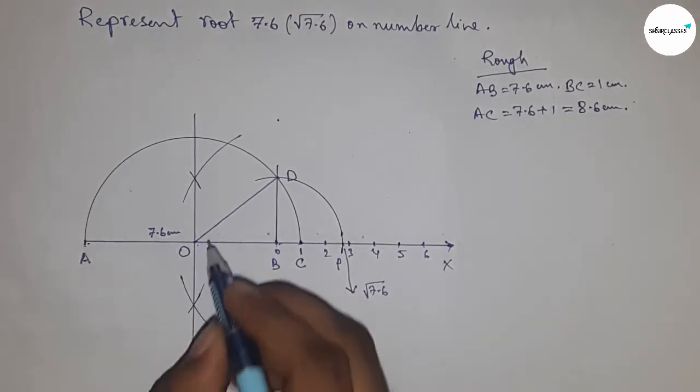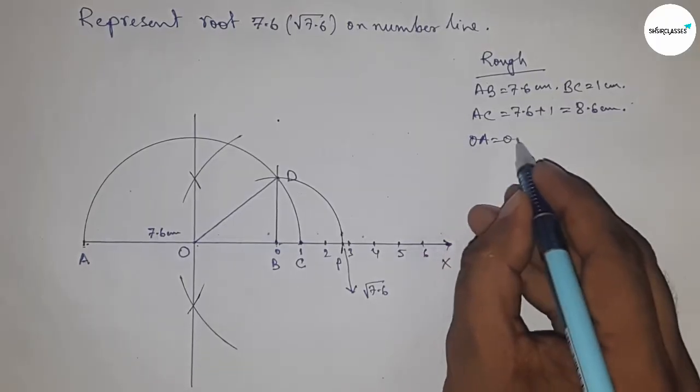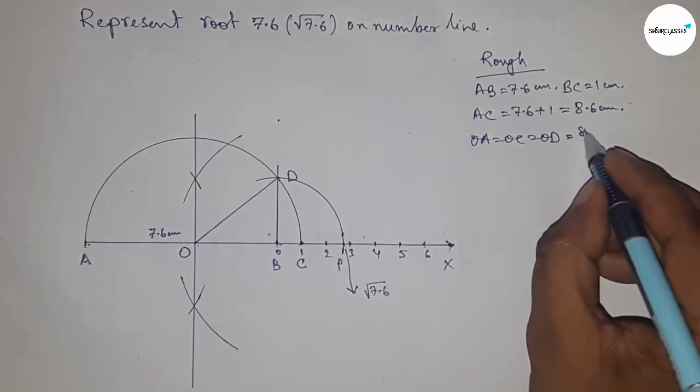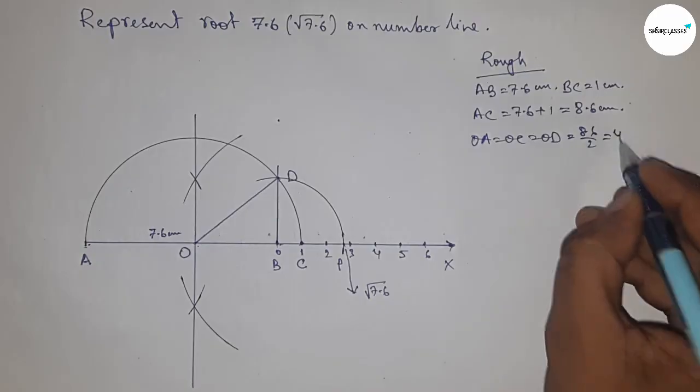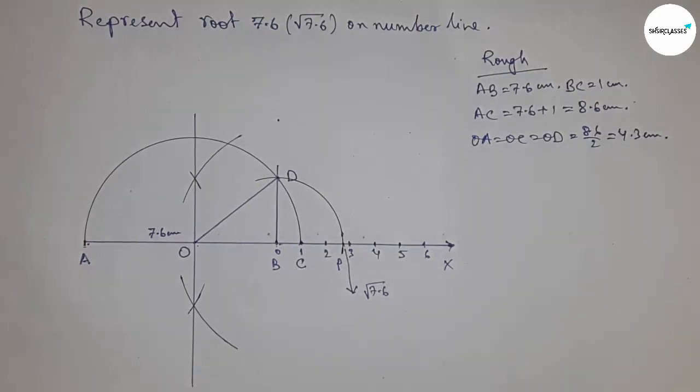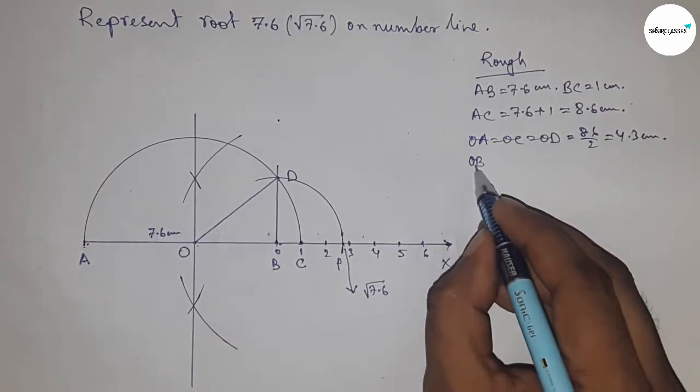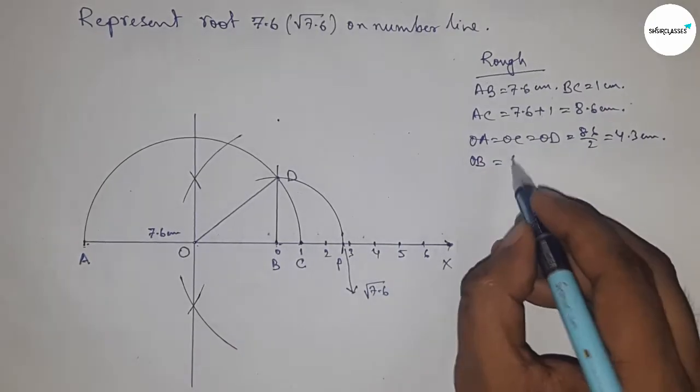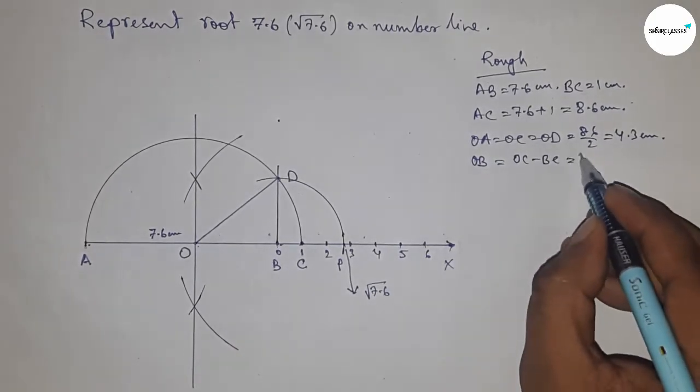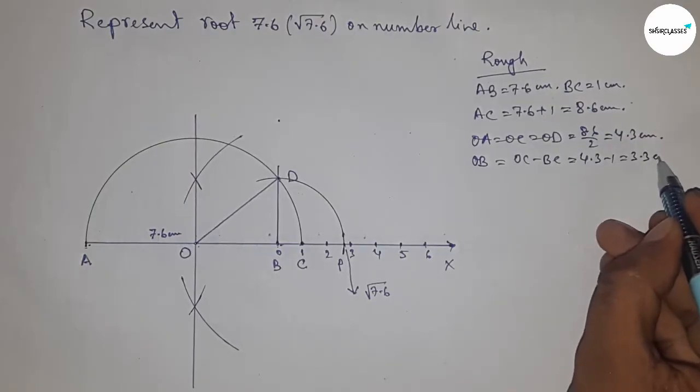Now radius OA, OC, and OD equal 8.6 divided by 2, which equals 4.3 centimeter. Length OB equals OC minus BC, so putting the values, this is 3.3 centimeter.